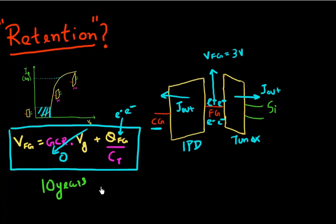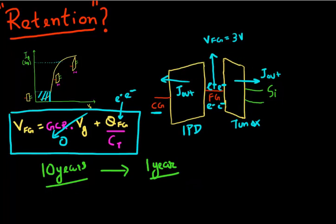Now this requirement has been relaxed a little bit and now what people say is if you can retain it for one year, they are quite okay with it because there is this redundancy built on the system level. But still this retention is a very key metric. You don't want to take a photo on your iPhone and then find out that a year later it's no longer there. So it's important to meet this retention requirement. And this behavior of my tunneling where I get low tunneling current at low voltage is key in maintaining and meeting this retention requirement.